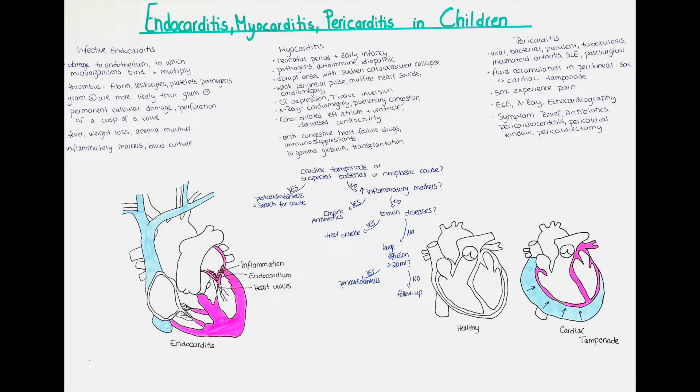Let's first recap the structures of the heart that can become inflamed. The heart has an endocardium, the innermost layer, a myocardium, which is the muscular layer, and a pericardium, which is the outer layer. The heart also has different valves that can be affected as well.